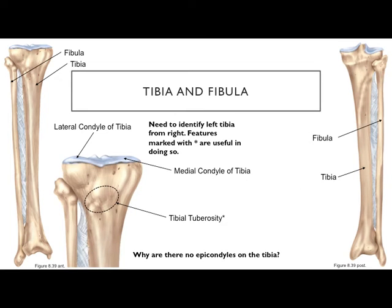The tibia and fibula make up the leg. The tibia is the larger bone. Note the terminology shift: the femur is the thigh, and the tibia and fibula together are the leg — the opposite pattern from the upper limb where the humerus was the arm. On the tibia, you need to know medial and lateral condyles (which articulate with the condyles of the femur), and the anterior tibial tuberosity.